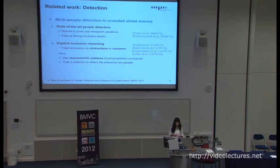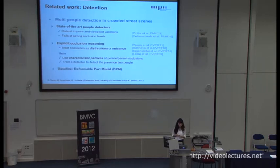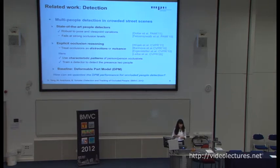In our approach, we explore alternative strategies. We employ the joint evidence of two people and use the characteristic patterns of people-people occlusion to train a detector and detect the presence of two people. In our work, we use the deformable part model as our baseline. The next question is: what is the performance of DPM for occluded people and how can we quantize it?